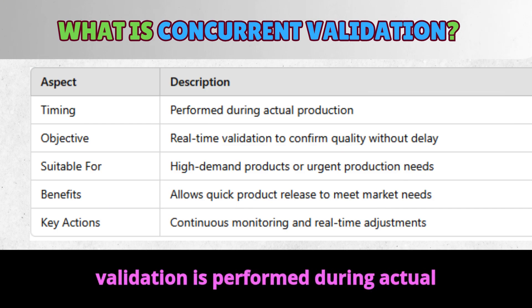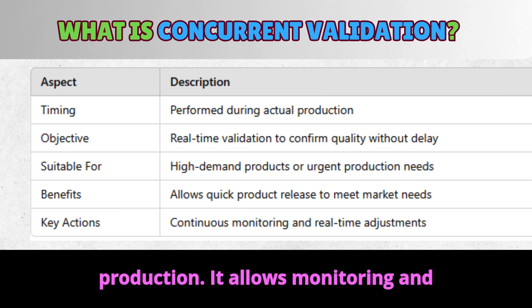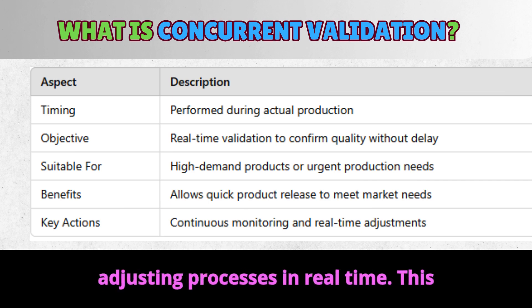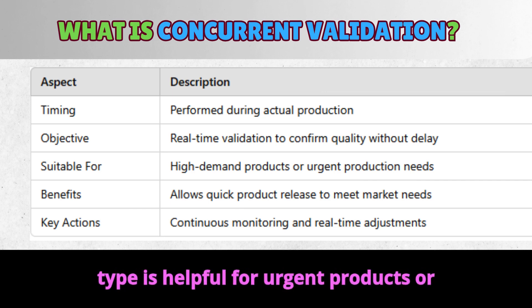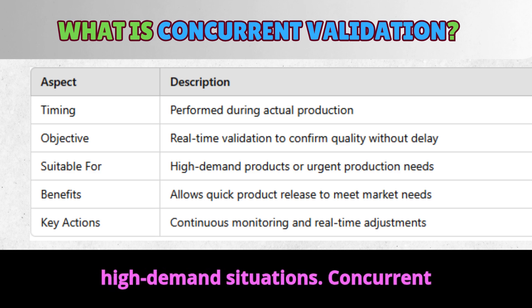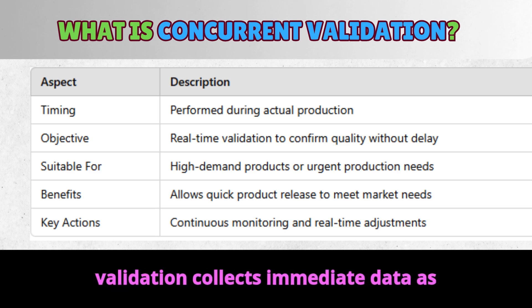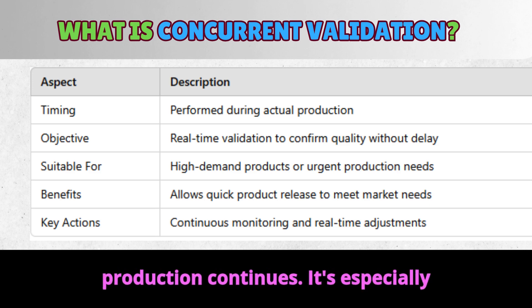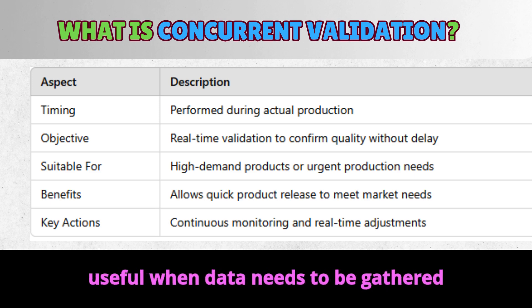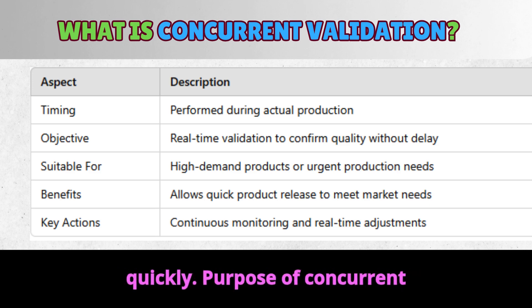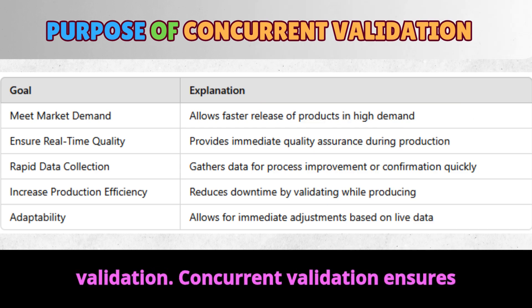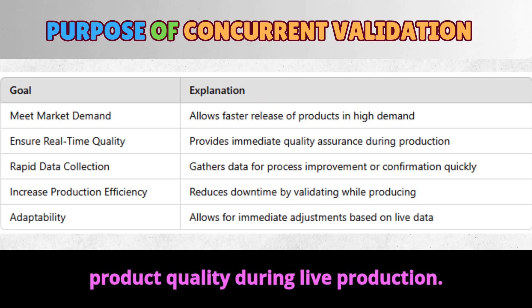What is concurrent validation? Concurrent validation is performed during actual production. It allows monitoring and adjusting processes in real time. This type is helpful for urgent products or high-demand situations. Concurrent validation collects immediate data as production continues. It's especially useful when data needs to be gathered quickly.